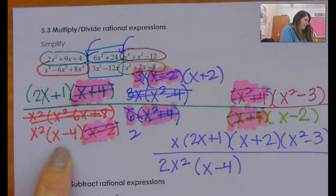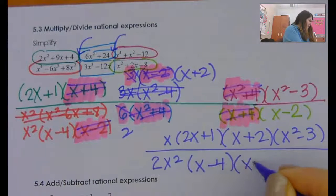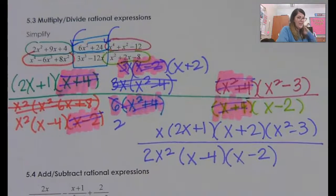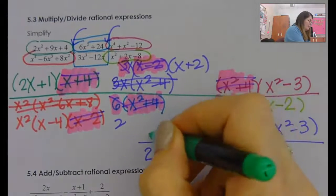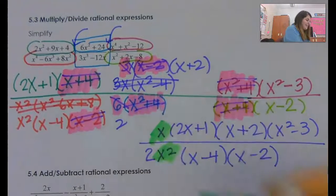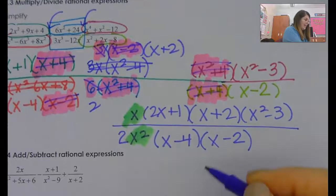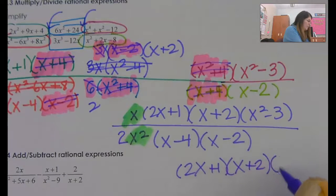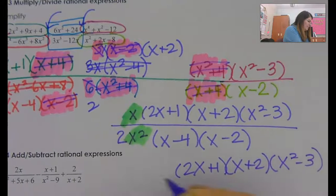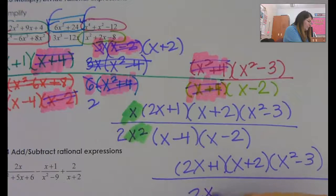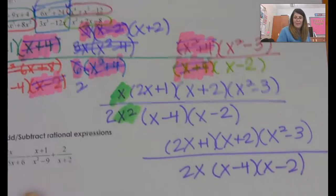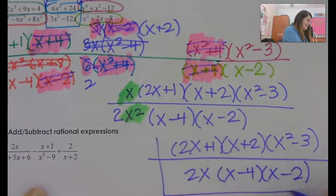The 2 I'll put out in front, and then an x minus 2. Now this is going to happen to you a lot. You get here and you're like, oh gosh darn it, I'm not done, because you want to check. x's on top of x's is not okay. So this is going to become 2x plus 1, x plus 2, x squared minus 3, all over 2x times x minus 4, x minus 2. This is my answer.